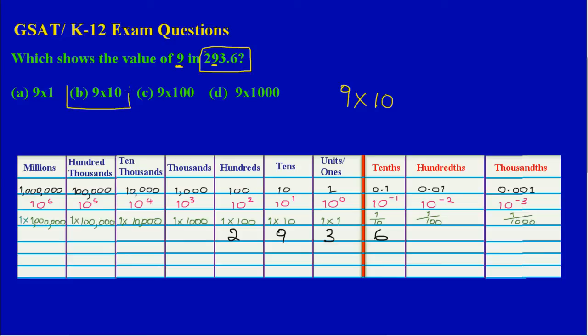Because the nine is the same as nine times ten because it is placed in the tens column. And that's it.